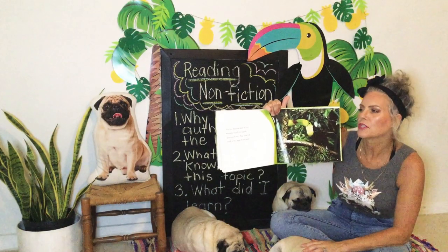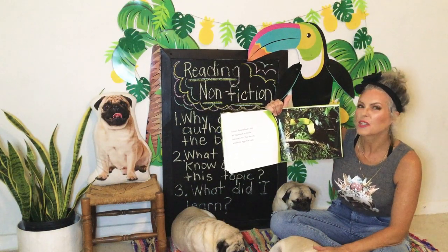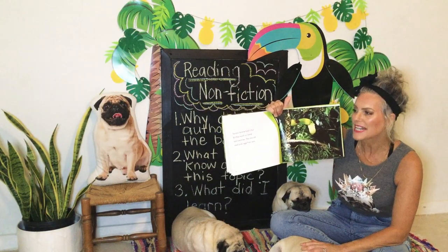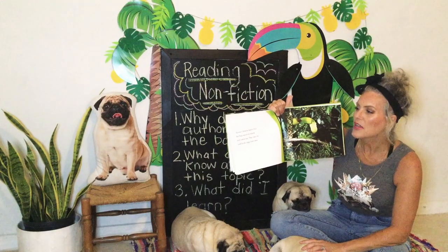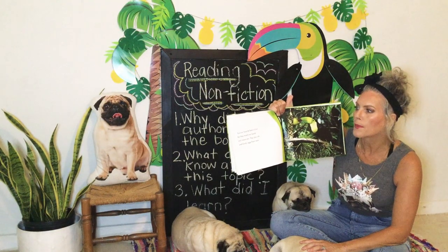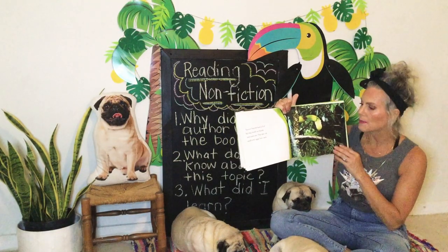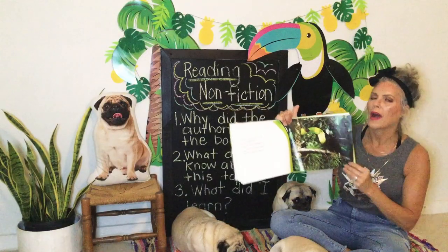Toucans' favorite food is fruits, but they munch on lizards and insects too. They also rob small bird eggs from nests. Wow.